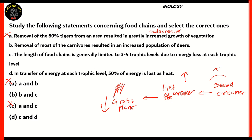Statement B says removal of most carnivores resulted in an increased population of deer. Replacing the first consumer with deer — deer eats plants, carnivores fit in the second or third consumer level. If we remove most carnivores, there are fewer animals to eat the deer, so the deer population will increase. This is exactly what statement B says, so statement B is correct.